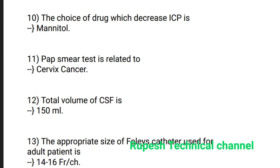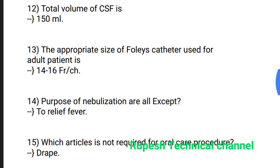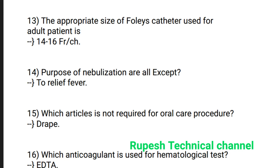Question number 10: The drug used to decrease ICP is Mannitol. Question number 11: Pap smear test is related to cervical cancer. Question number 12: Total volume of CSF is 150 ml.